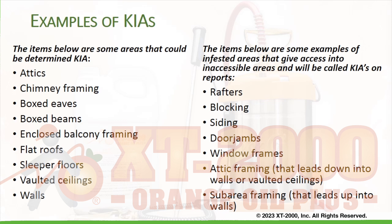Items on the right are infested areas that could give access into inaccessible areas and will be called KIAs on reports: rafters, blocking, siding, door jams, window frames, attic framing that leads down into walls or vaulted ceilings, and sub-area framing that leads up into walls.